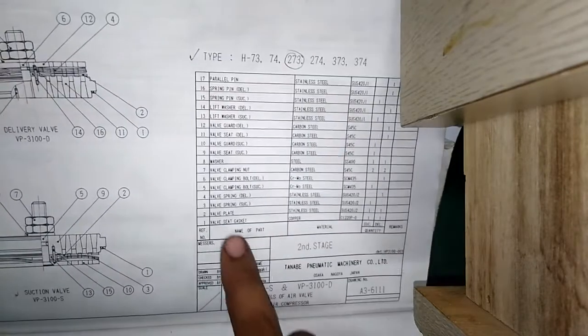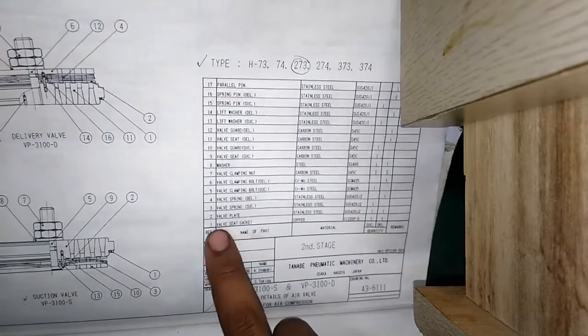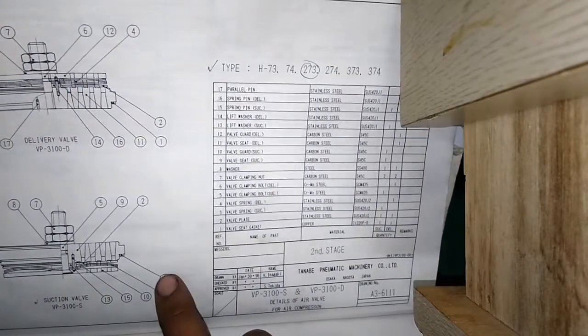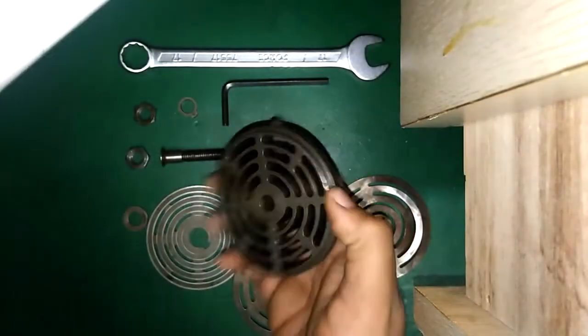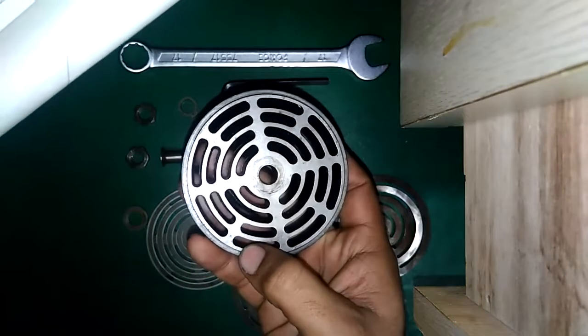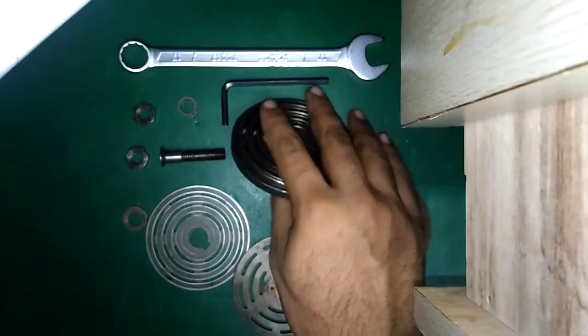Number one is the section side valve seat gasket. This is a copper gasket which will be placed here. I do not have it.